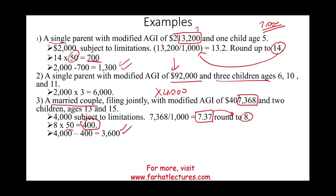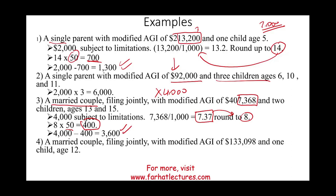So the credit is $4,000 minus $400, giving an amount of $3,600. Let's look at one more example: a married couple filing jointly with a modified AGI of $133,098 and one child age 12. They are well below the $400,000 threshold, so the credit is simply $2,000 with no limitation.